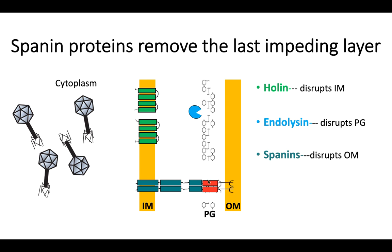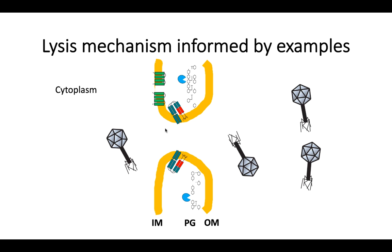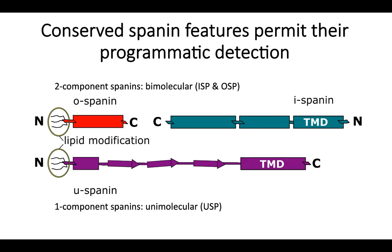We're going to focus today on the spanins, which disrupt the final barrier in a rather unique mechanism that we'd like to understand more biologically — which is where the bioinformatic part of this project comes in; we need more examples to look at. Spanins, while having a somewhat unique mechanism of action, actually have some relatively generic protein features, including lipid modifications and transmembrane domains. And that's true of the three main types of spanins: the O-spanins, the I-spanins, and the U-spanins.